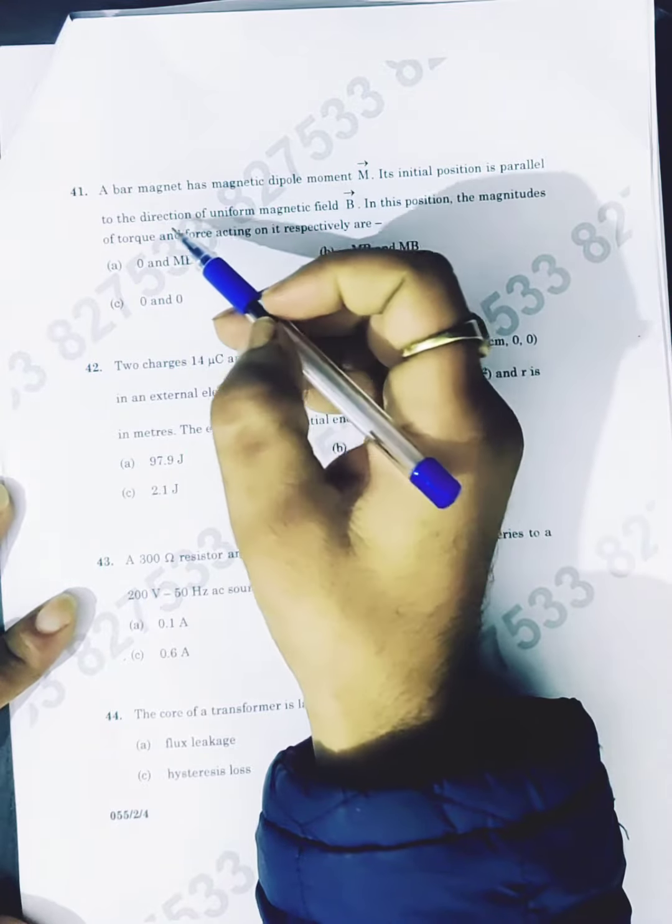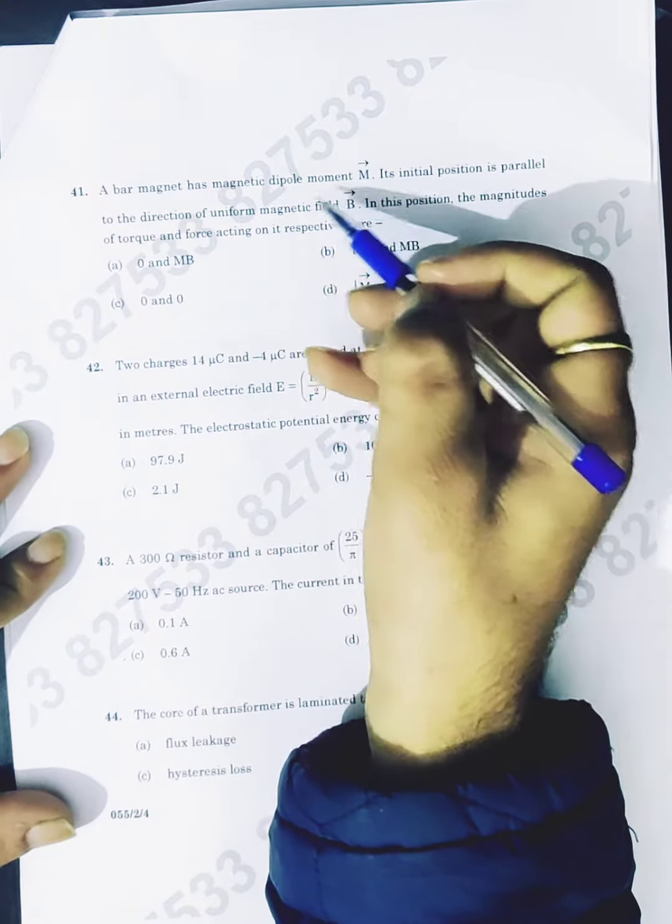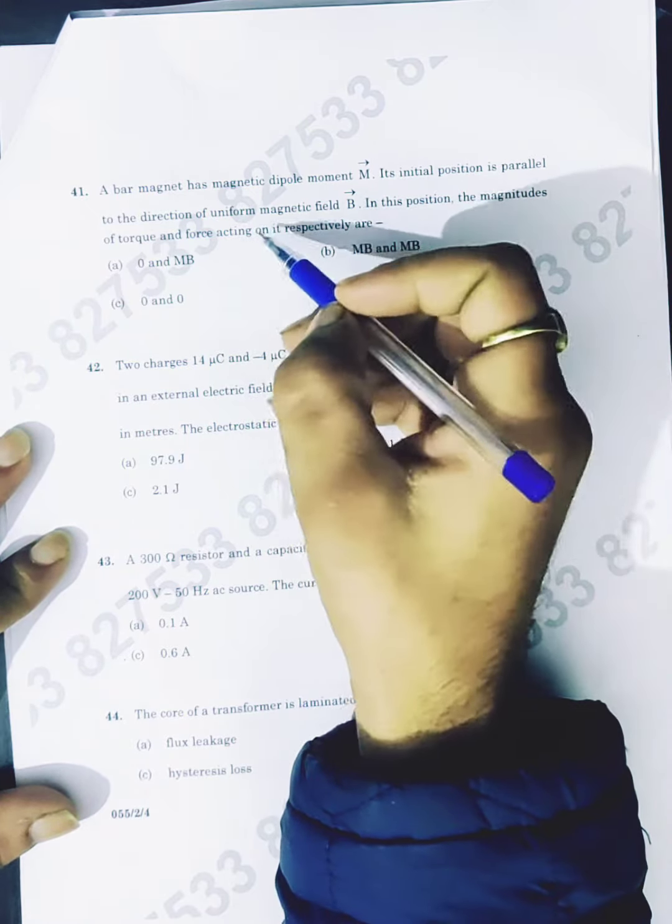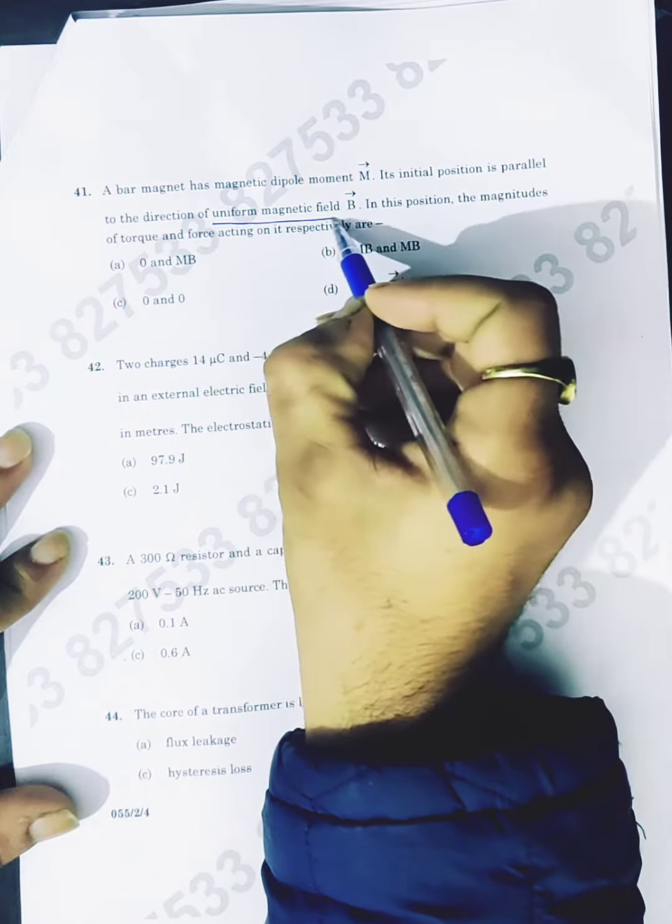Question 41. A bar magnet has magnetic dipole moment M. Its initial position is parallel to the direction of uniform magnetic field.